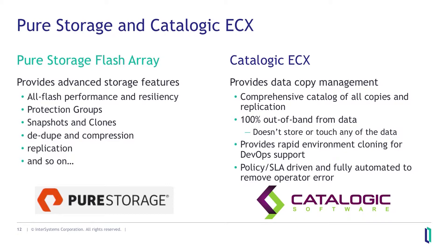Now I'm going to show an example of how to accomplish this using Pure Storage flash arrays and Catalogic ECX. There are several other options available, but for this session we'll focus on just this combination to get into the details of exactly what happens. Both Pure Storage and Catalogic are represented in the partner pavilion this week. Pure Storage flash array provides all the goodness of all-flash arrays, especially for snapshot and cloning capabilities and consistency groups — or protection groups as they call them. Catalogic ECX is a data copy management platform that orchestrates and catalogs all copies, replication, and clones. One key point: unlike other backup software, ECX is 100% out of band from the data itself — it operates purely by interacting with APIs within the storage array.